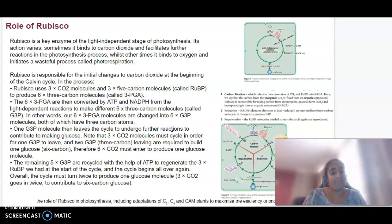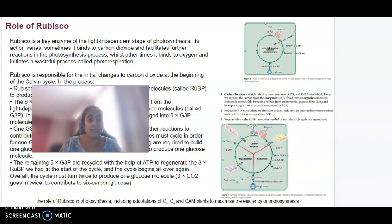The remaining five G3P molecules are recycled with the help of ATP to regenerate more RUBP that we had at the start of the cycle. The cycle continues over and over. Overall, each cycle turns twice to produce one glucose molecule. We can see that summarized here where you can see carbon fixation, reduction, and regeneration. I encourage you to pause the video and look at the inputs and outputs of each stage.